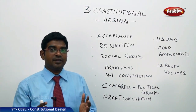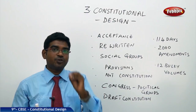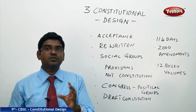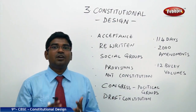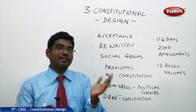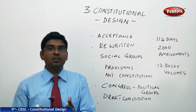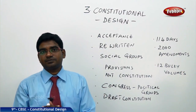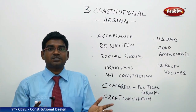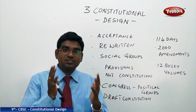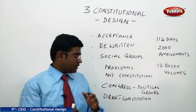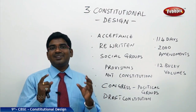Even universal adult franchise alone cannot guarantee a right constitution. The diversity of opinions is a major advantage — with many representatives having diverse opinions and different ideas on different subjects, all these were discussed thoroughly in the Constituent Assembly. Drafting a constitution was not an easy task.